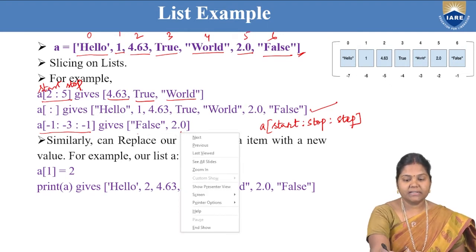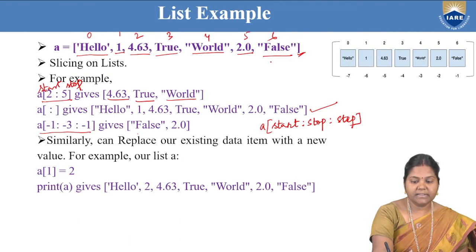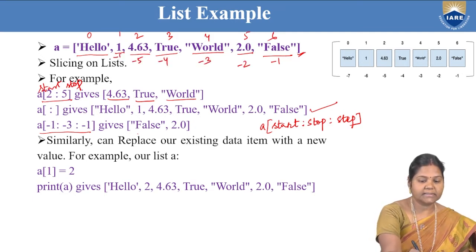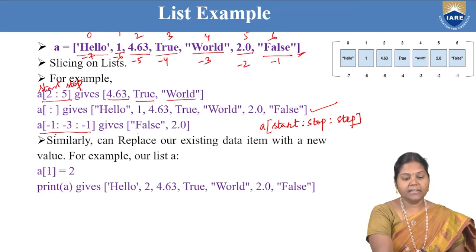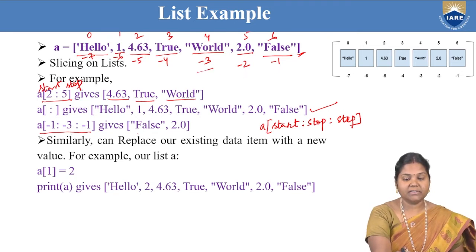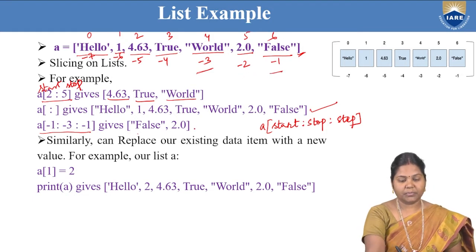You can see that this is negative indexing: minus 1, minus 2, minus 3, minus 4, minus 5, minus 6 and minus 7. Here from minus 1 to minus 3: the start value is minus 1, stop value is minus 3, so minus 3 will not be included. Therefore, 'false' and 2.0 will be the outputs.